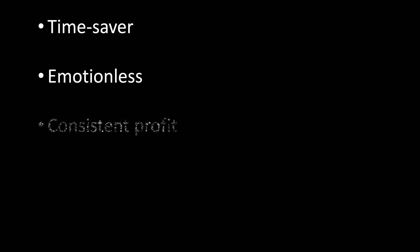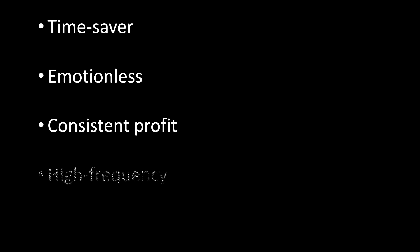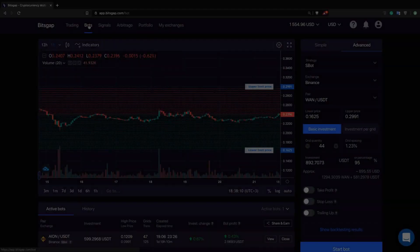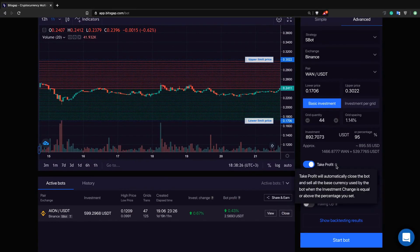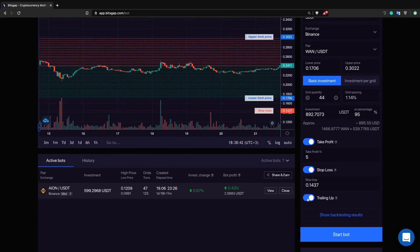Bitsgap automation is a time saver, so no need to spend hours in front of the computer on manual trading. It is emotionless — Bitsgap automated bots only care about volatility to seize the right moment to execute a trade. Consistent profit inflow — volatility is now your best friend. High frequency, non-stop high-speed trading. And finally, investment protection, as the bot generates profits to offset the negative value change in case of a falling market. So let the bot maximize your return and protect you from the falling market.